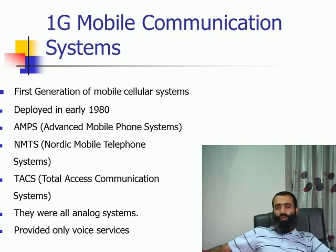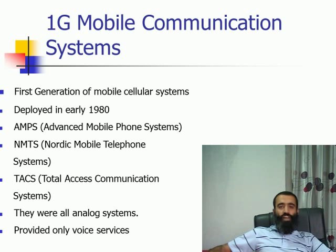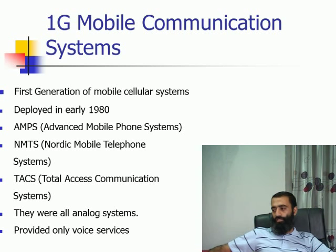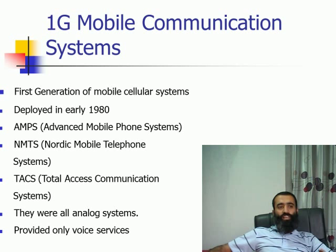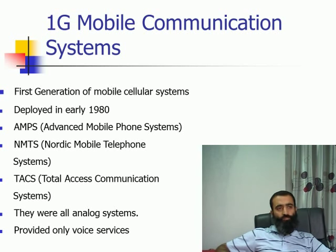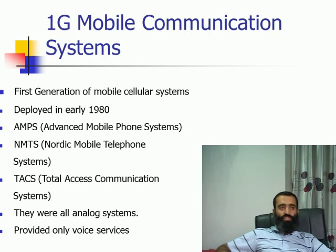First of all, when we talk about 1G, what does this G stand for? G actually stands for generation. 1G means the first generation of the mobile communication systems, and this first generation was actually deployed in the early 1980s. There were three most popular systems — there were many systems in the 1G, but the three most popular were AMPS, Advanced Mobile Phone System, which was primarily developed in the United States of America.